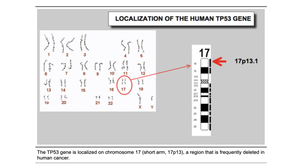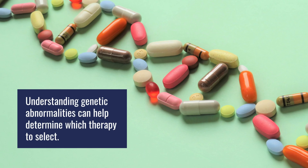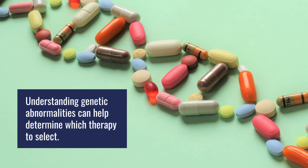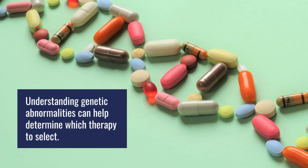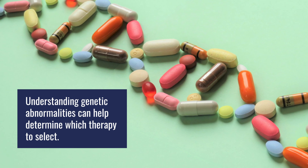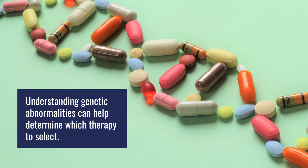So it's important to know these things in terms of mapping out your long-term outcomes and different therapy options. As our technology gets better, understanding which genetic abnormalities we have helps drive specific therapies. For example, we know that people with an 11-14 translocation have a higher chance of responding to venetoclax.